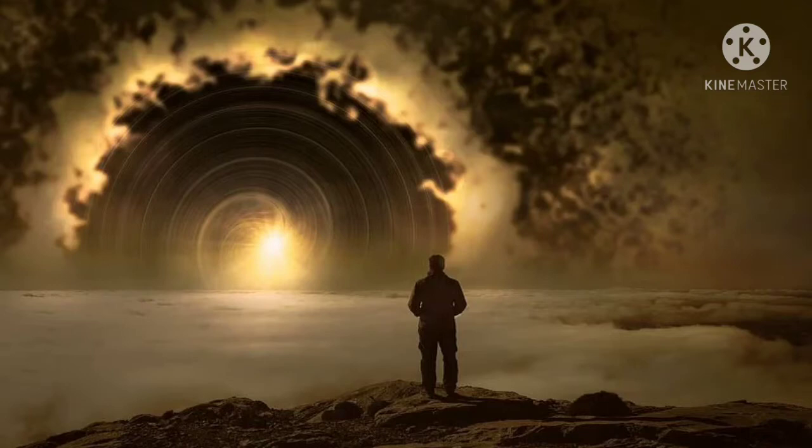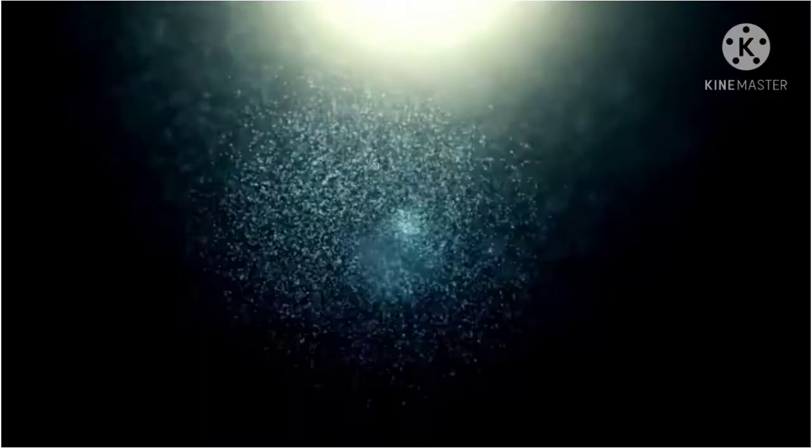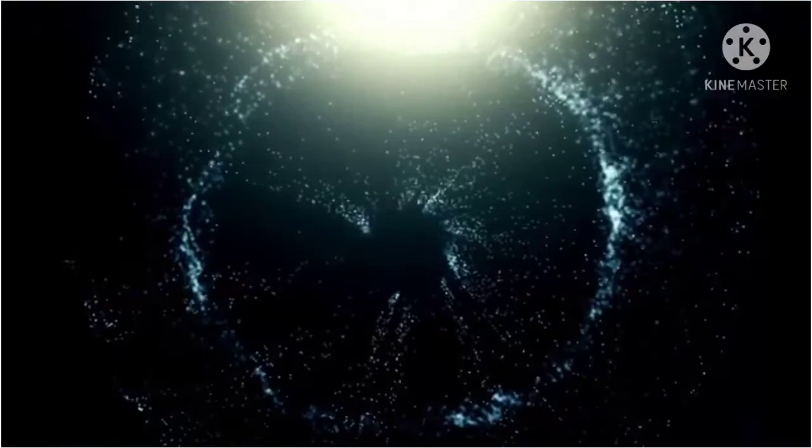If black holes are black, how do scientists know they are there? A black hole cannot be seen because strong gravity pulls all of the light into the middle of the black hole. But scientists can see how the strong gravity affects the stars and gas around the black hole.